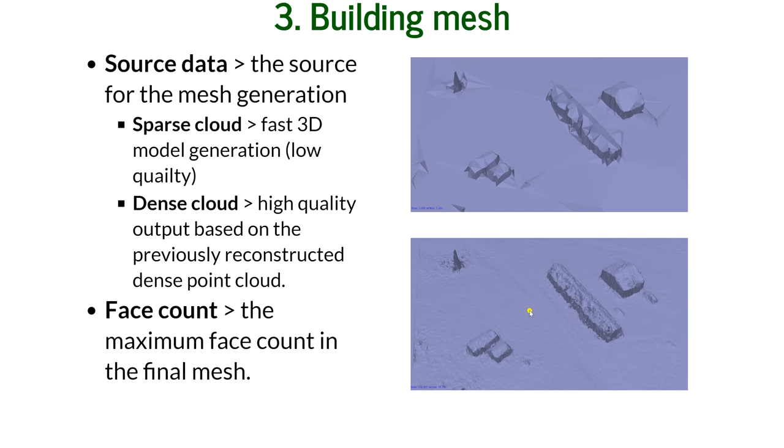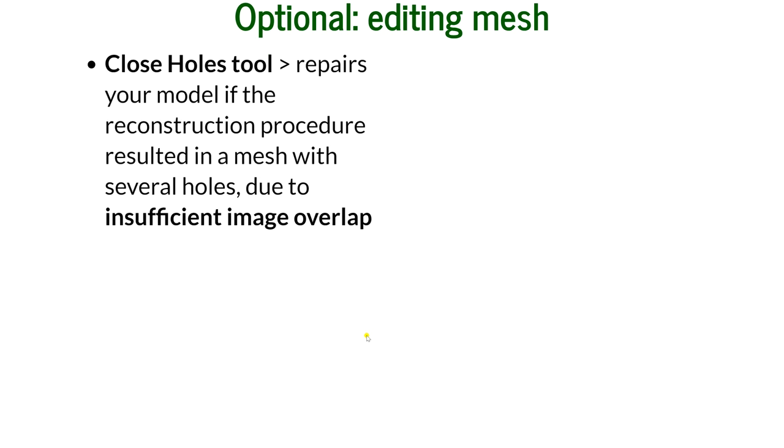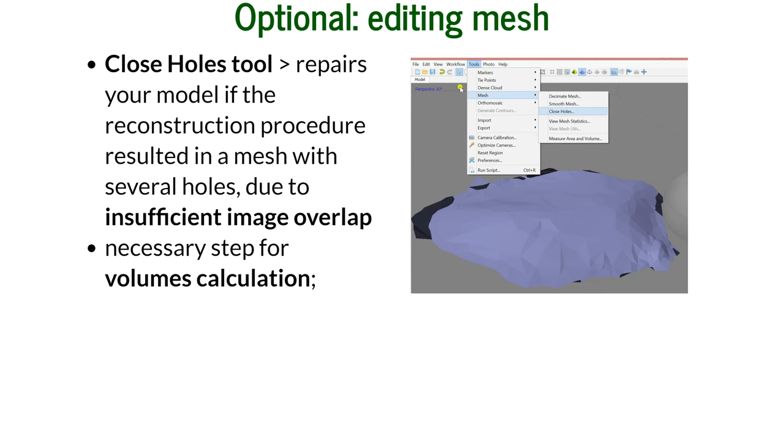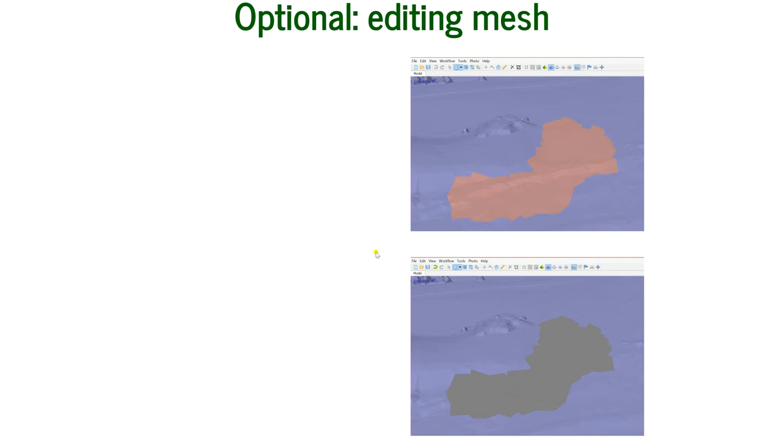Optionally, you can also edit mesh. One very important feature in editing mesh is close holes. It repairs your model in the reconstruction procedure by filling the holes. Sometimes the faces contain holes, so they're not closed. It's necessary for volumes calculation. We're going to calculate volumes in the next assignment. You go to tools, mesh, and close holes. It's necessary for volume calculation to close all 100% of holes.